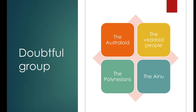The last subgroup is the Ainu. The Ainu are the tribal people of Japan. They are light brown in complexion, wavy-haired, narrow-headed, and medium-nosed. These are the four groups as classified by Kroeber. I hope this classification is clear to everyone. Thank you.